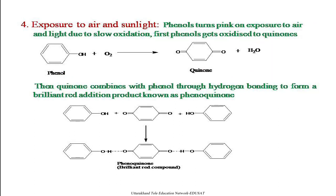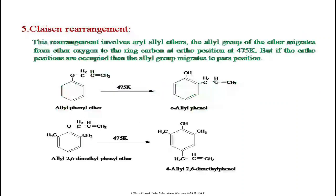On exposure to air and light, phenols get oxidized and turn pink. First, phenols are converted to quinones. This phenol when reacted with oxygen is converted to quinone. Then this quinone combines with phenol through hydrogen bonding to form a brilliant red addition product known as quinhydrone. The two phenol groups react with the quinone and a hydrogen bond is formed between them, giving the brilliant red compound quinhydrone.